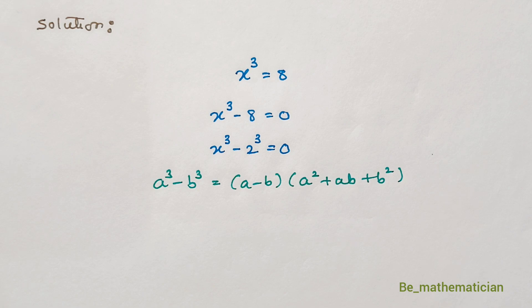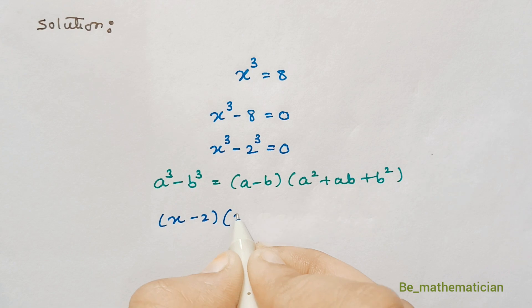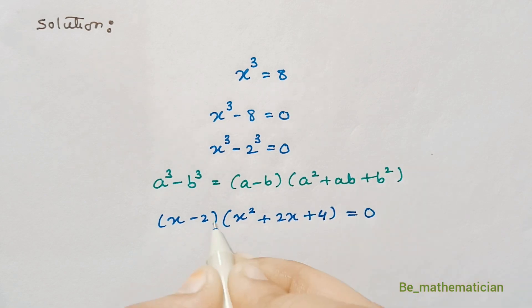In this case, our a is x and b is 2. So let's substitute. We get x minus 2 into x square plus 2x plus 2 square is 4 is equal to 0.